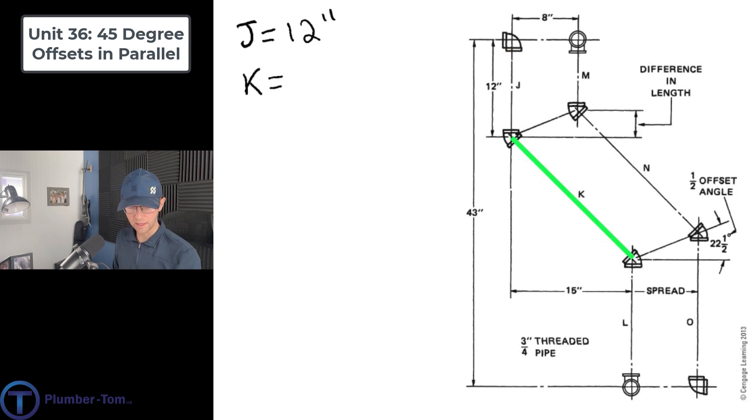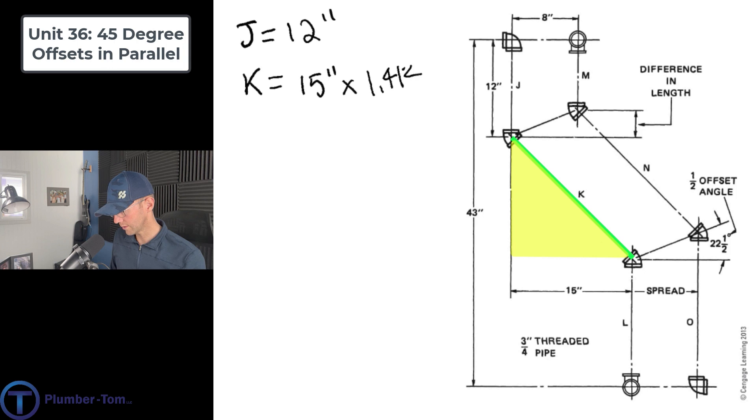Okay, on to K then. You see, K is a diagonal. And as we examine that triangle, once again we're using 45 degree fittings, so we know what kind of triangle we're dealing with. And we have an offset there that is 15 inches. So we're just going to take that 15 inches times it by 1.414. 15 times 1.414 is going to give us K equals 21.21 inches.